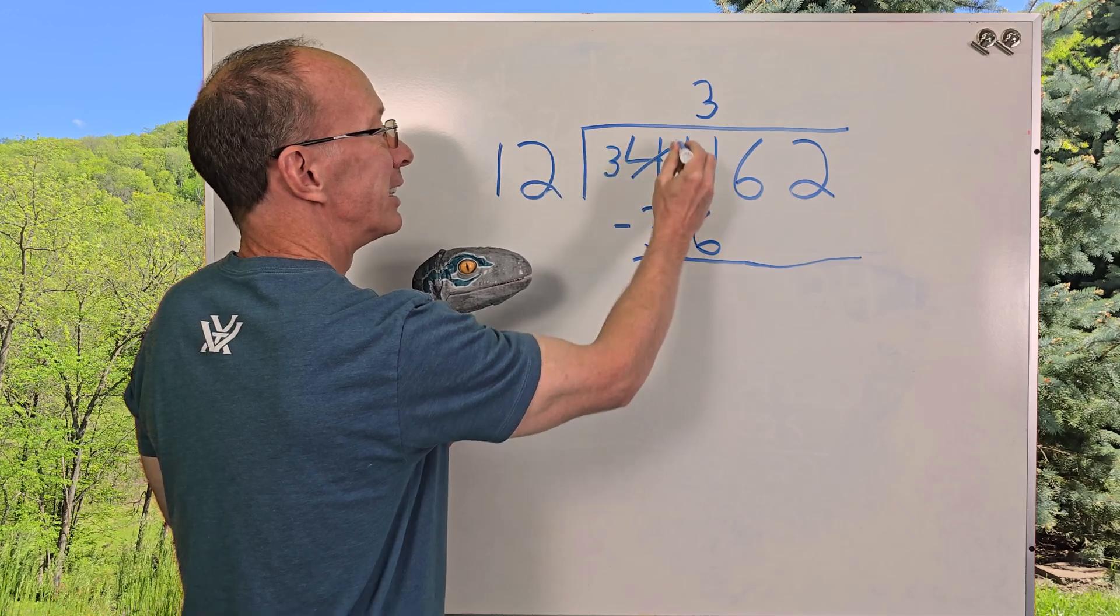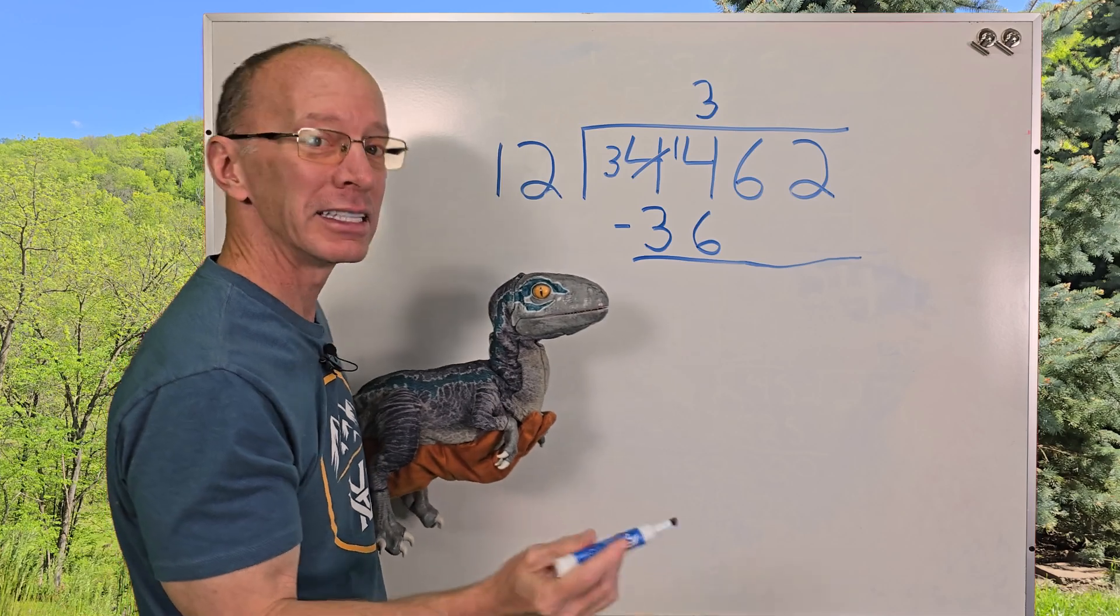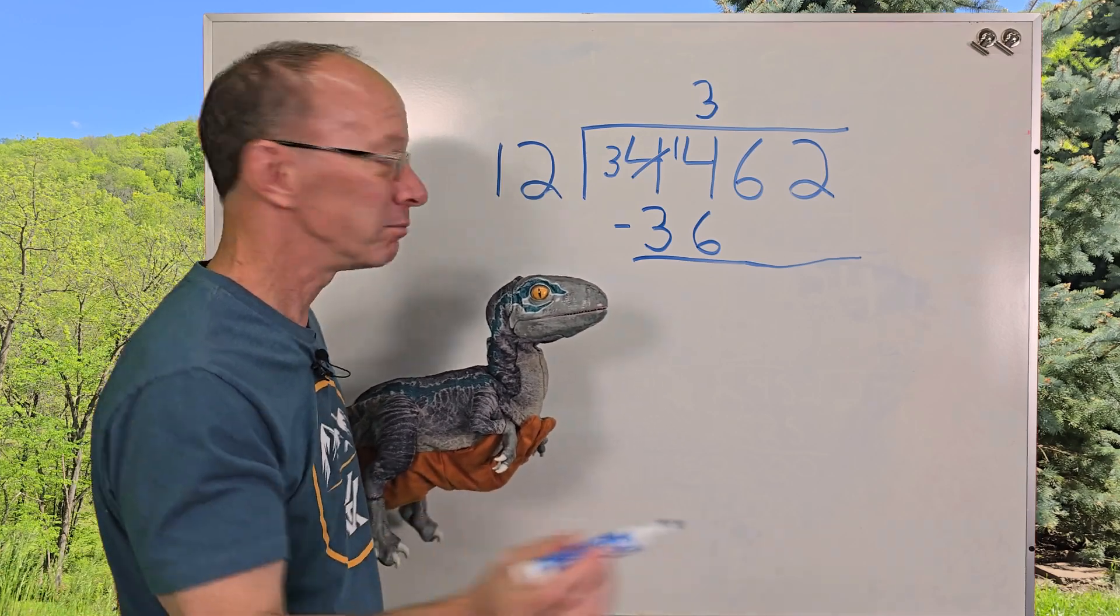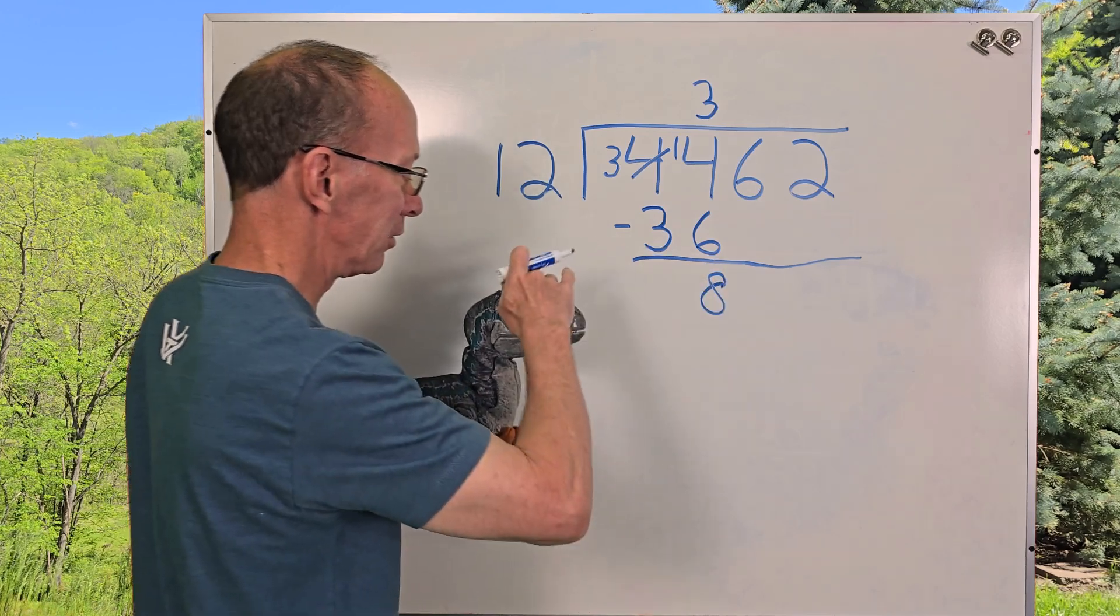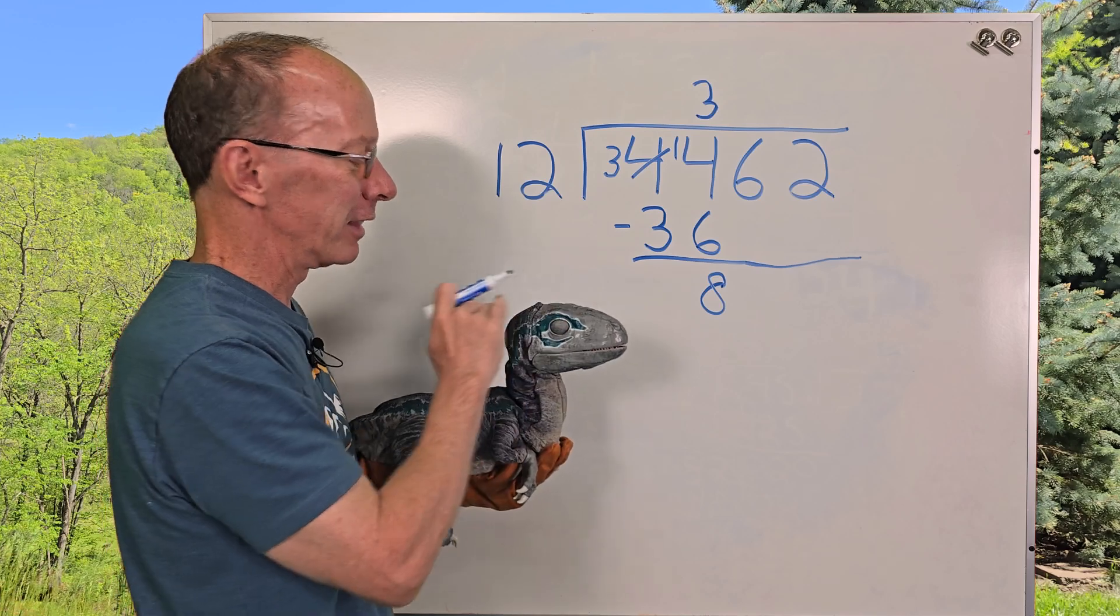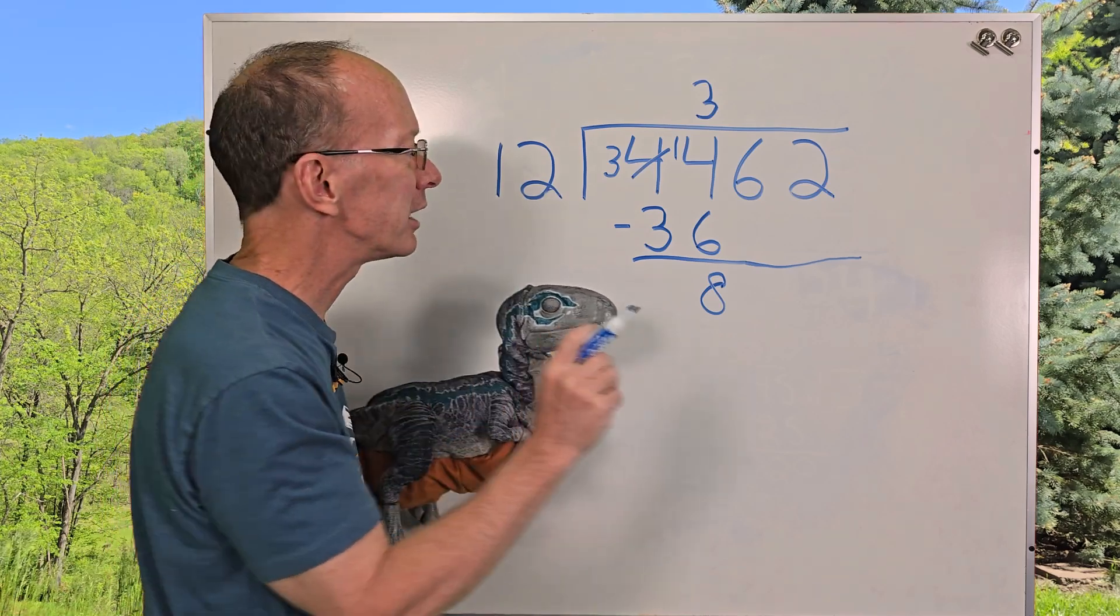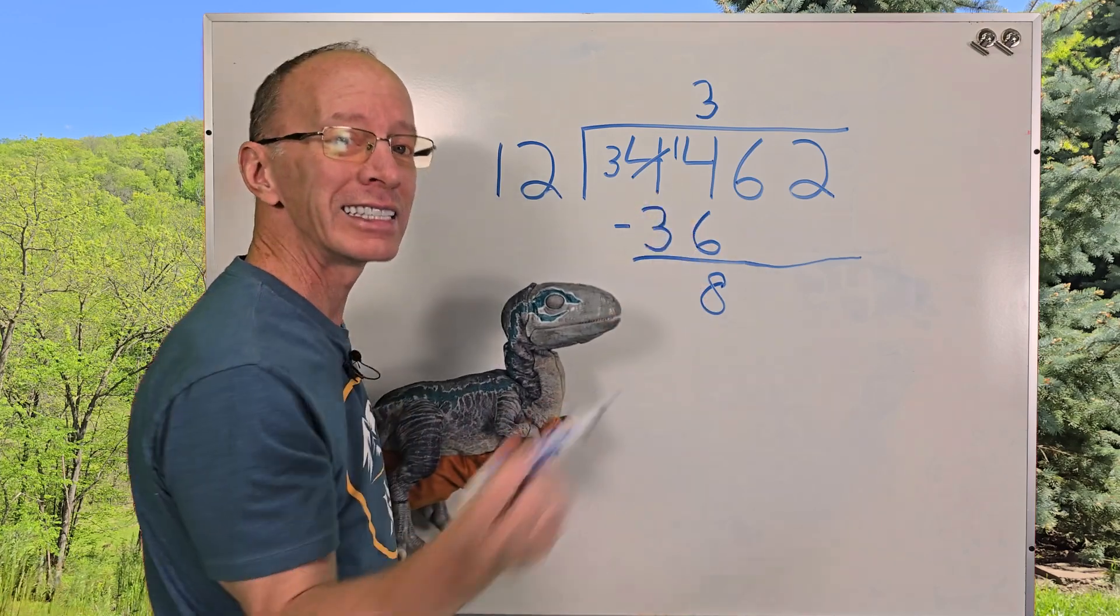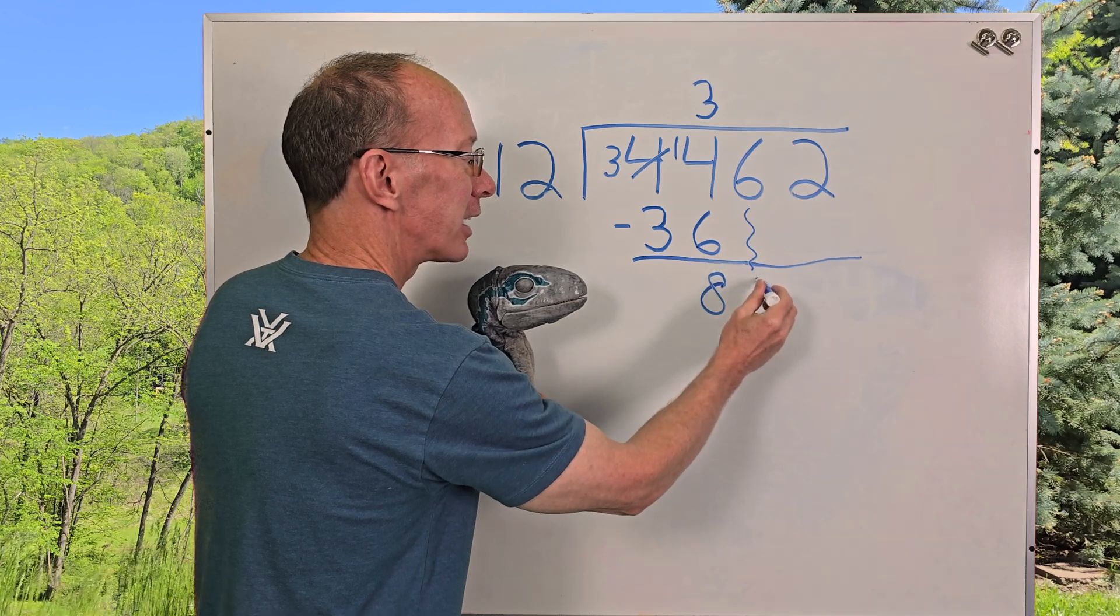So that will be a 3 right here. And then this changes to 14. And then 14 minus 6 equals 8. Don't be late. So I'm going to put the 8 right here. How are you doing there, buddy? I think we'll put it to sleep right there. And now I bring the next number down. Just bring it down. Just like that. So I now have 86.